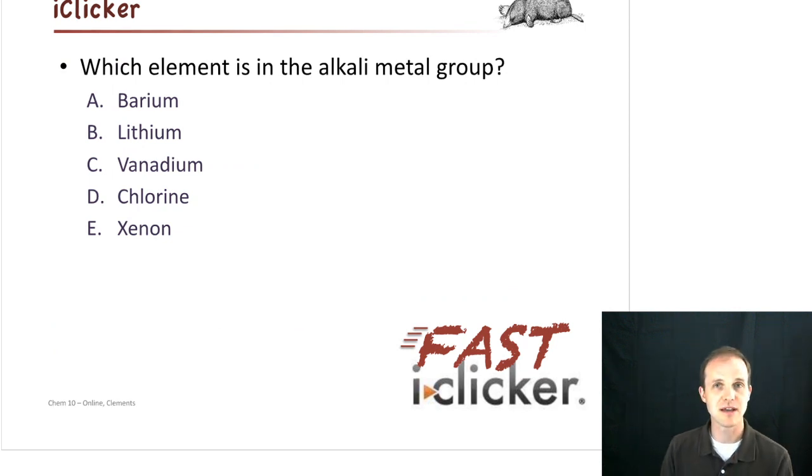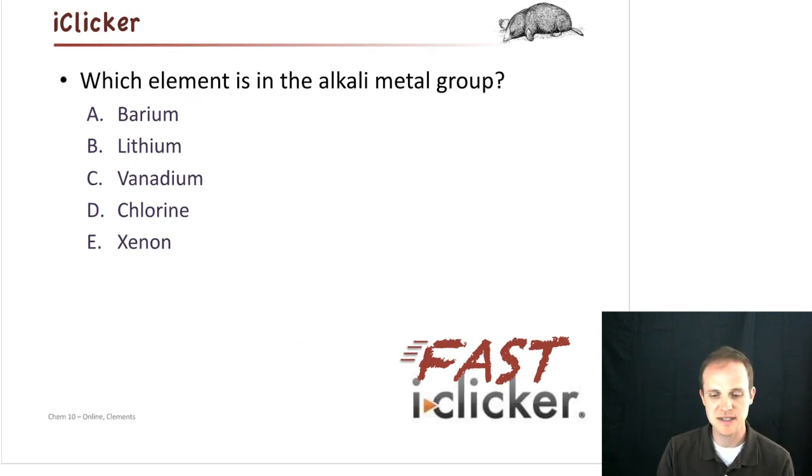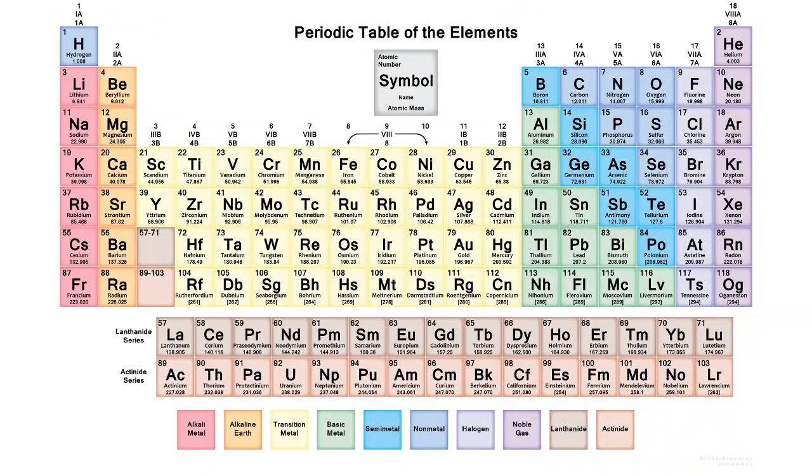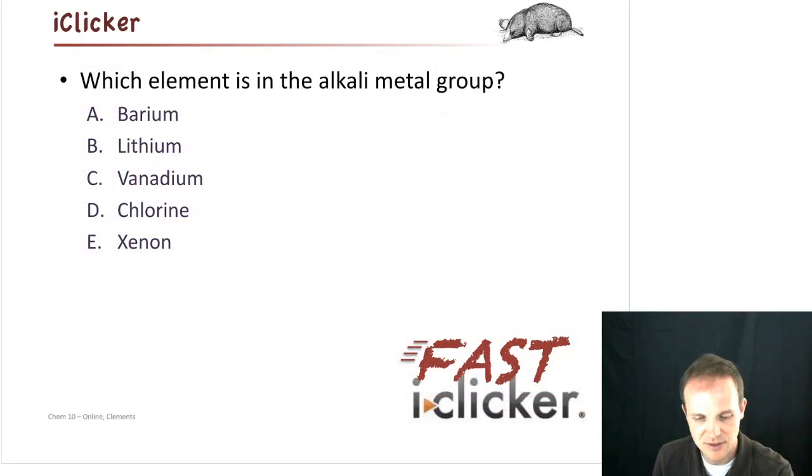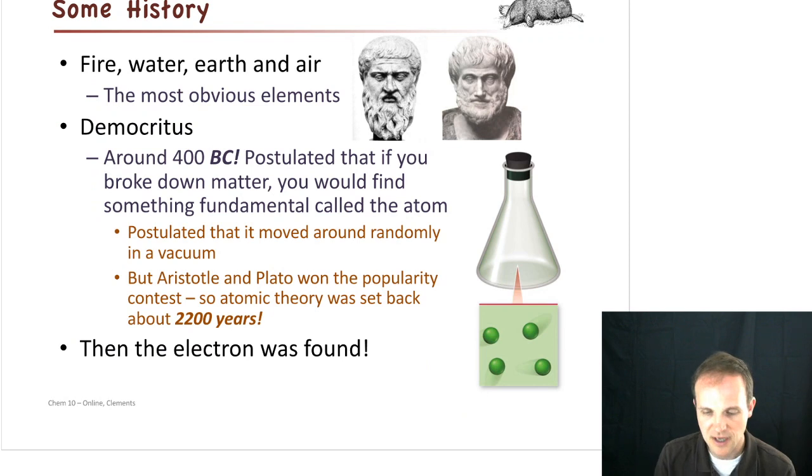All righty. So just as a reminder, let's do another question here. Which element is in the alkali metal group? Okay, so take a moment to try to answer that one. All righty. So alkali metals, let's go back to our periodic table. Where are the alkali metals? They're in that first group. So lithium, sodium, potassium, rubidium, cesium. Okay. So what do we have on here that satisfied that one? We had lithium right there. So lithium is the alkali metal. All right. Moving on.